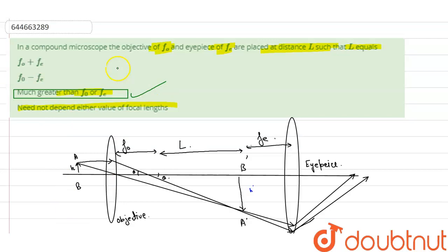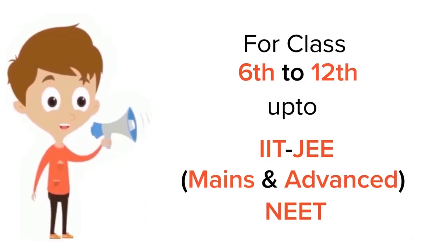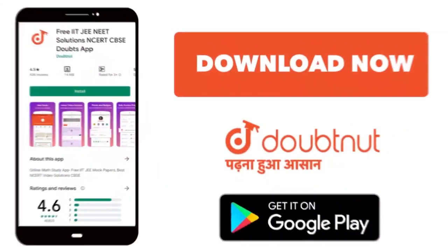I hope I have solved your question. Thank you. For Class 6 to 12, IIT and NEET level, trusted by more than 5 crore students. Download Doubtnet app today.